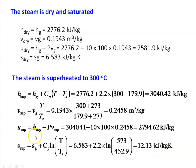Specific entropy of superheated steam S_super = Sg + Cp × ln(T/Ts) = 6.583 + 2.2 × ln(573/452.9) = 12.13 kJ/kg·K. We have now calculated properties for wet steam, dry saturated steam, and superheated steam.